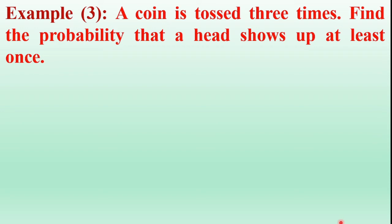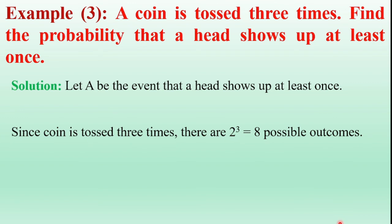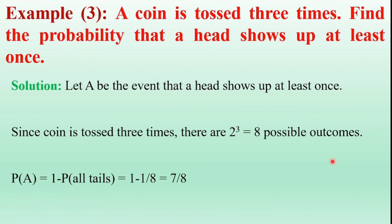One more example: A coin is tossed three times. Find the probability that a head shows up at least once. The possible outcomes are two cubed, equal to eight possible outcomes. Let capital A be the event that a head shows up at least once. Therefore, probability of A equals one minus probability of all tails, which is one minus one by eight, equal to seven by eight.